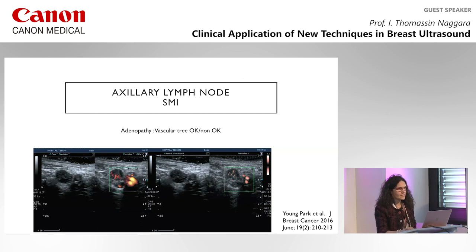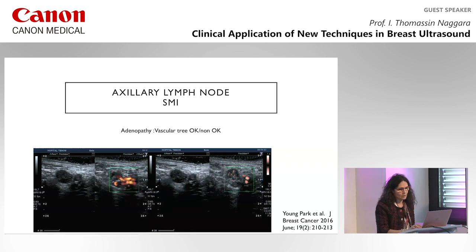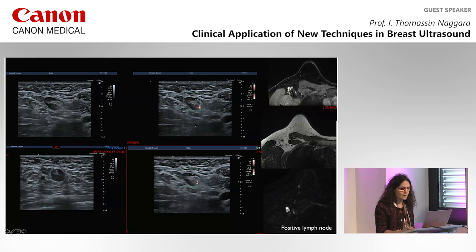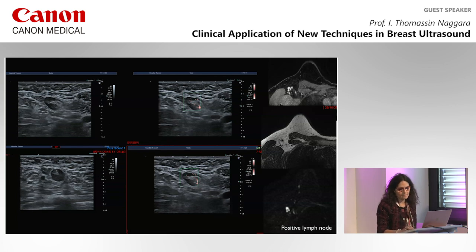For characterization of axillary lymph nodes, SMI can also be useful. In a normal adenopathy you will have a completely homogeneous tree-like vascular pattern — visible on Doppler but better seen on SMI. In this example with a right breast cancer, we found an adenopathy with vessels except in one part of the lymph node. We focused fine needle aspiration on that part and found needle metastasis. SMI can help target the correct part of the lymph node during biopsy.